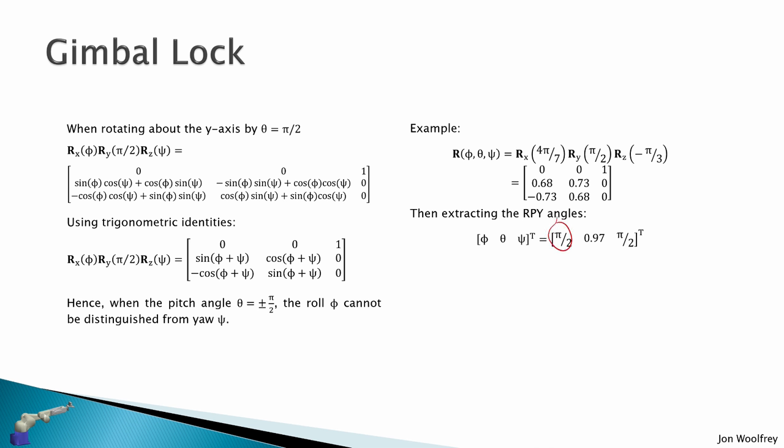To handle gimbal lock, we either set the standard operating conditions of our robot away from theta = ±π/2, or we avoid maneuvers that pass through theta = ±π/2. We can also define a rotation error R_e = R_d · R^T, where R_d is the desired rotation and R is the actual rotation. When the rotation error is the identity matrix, the desired rotation equals the actual rotation. From this rotation error matrix we can extract the roll, pitch, and yaw error angles phi, psi, and theta, defining the error in terms of roll-pitch-yaw.